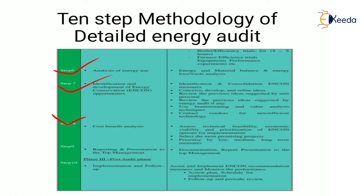Step 8 is cost-benefit analysis — assessing technical feasibility, economic viability, and prioritization of energy conservation opportunities for implementation. The most promising projects are selected and prioritized by low, medium, and long-term measures. Step 9 is reporting and presentation to top management — documentation and report presentation to top management is done. All of steps 3 through 9 come under the audit phase.